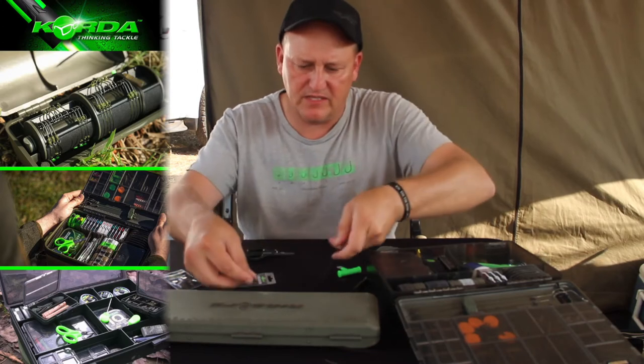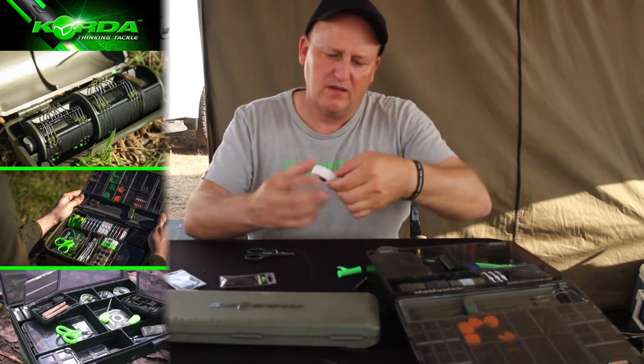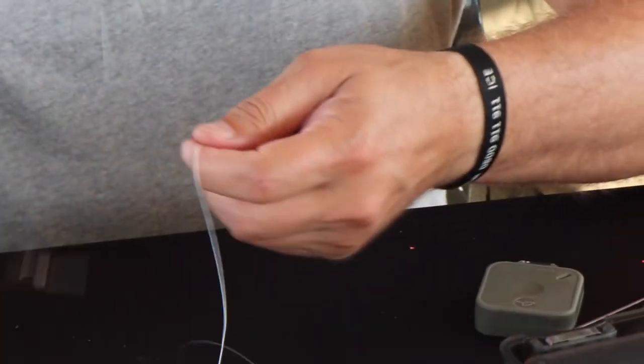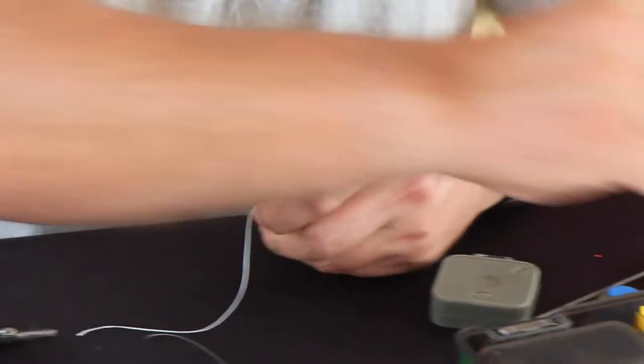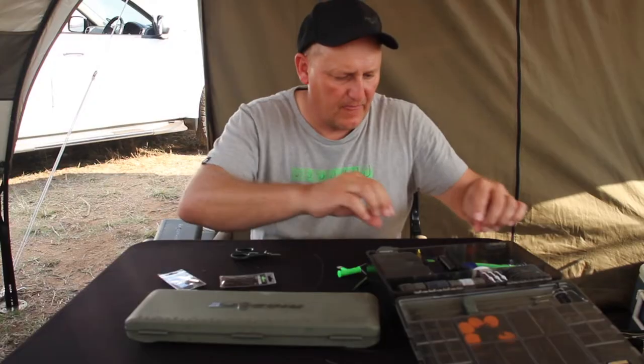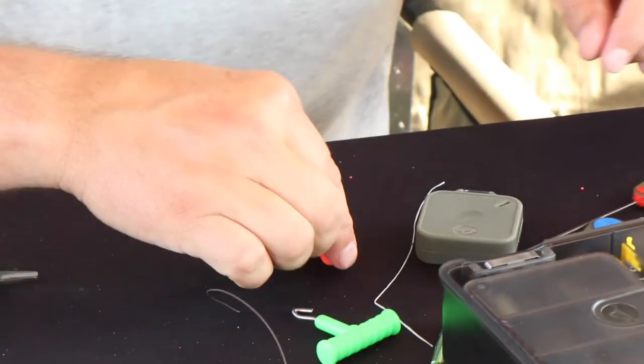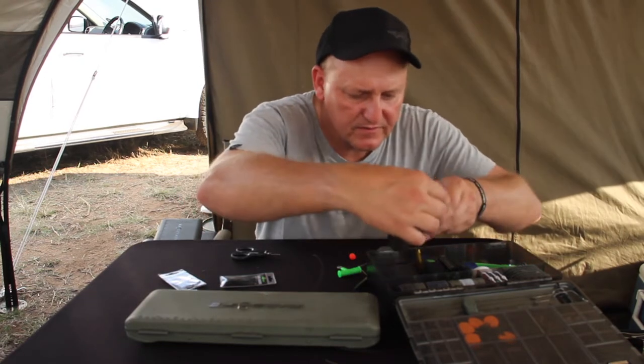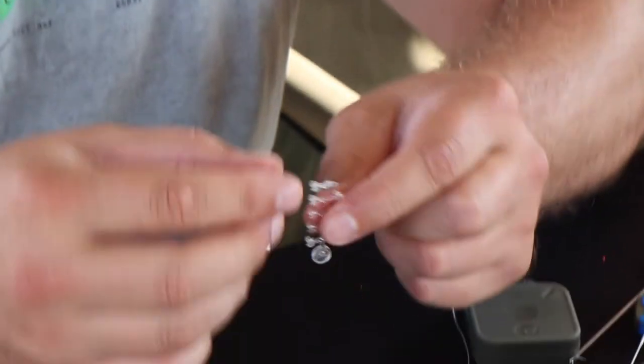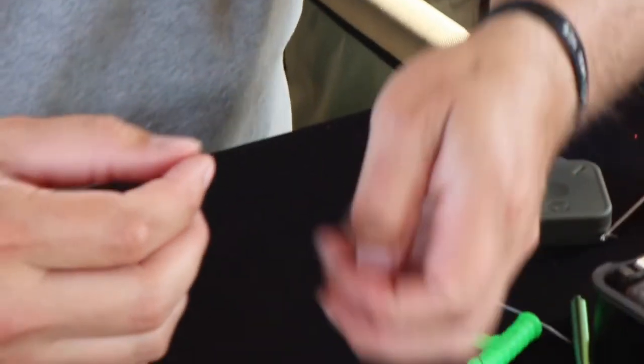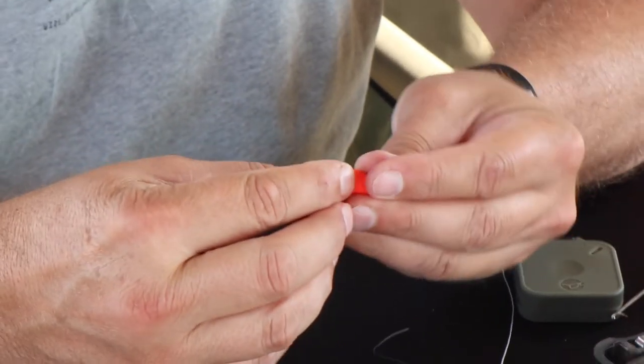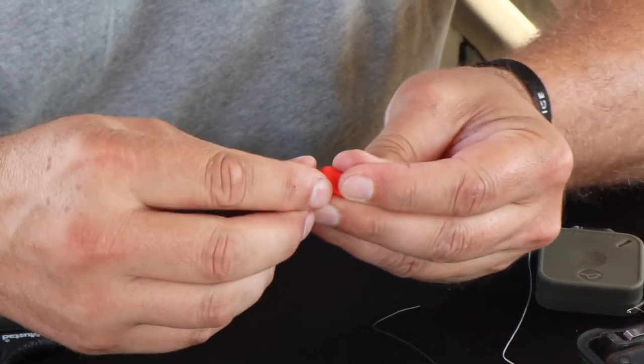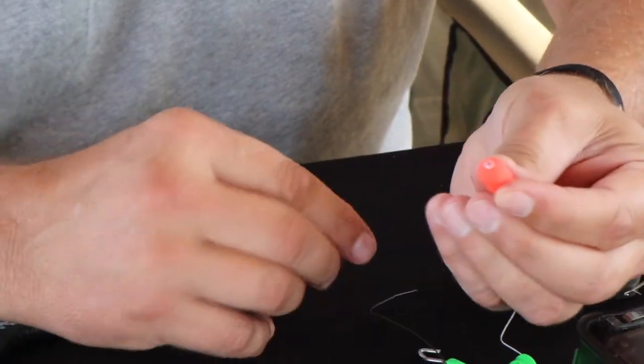Tying a bait onto that is even easier. Korda's bait floss. Take a piece of floss. Take a bait. Now I've got to get my floss caps. Now I add my Korda floss caps. You break one off and you just push it into the bait.